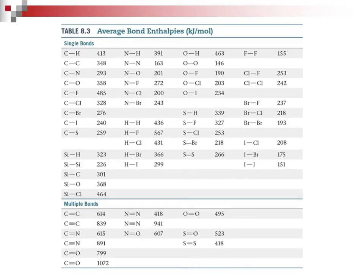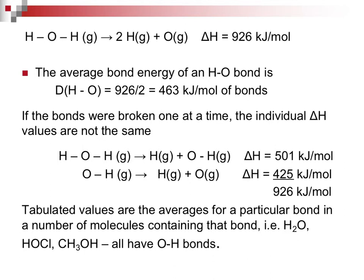Here's a list of all the average bond enthalpies that you will be using to solve problems in this section. Numbers are always provided. So, let's say we have water, where we have two different OH bonds. It's going to take 926 kilojoules to break that down into two atoms of hydrogen and one of oxygen. We will say the average bond energy is 463 kilojoules, dividing it by two.